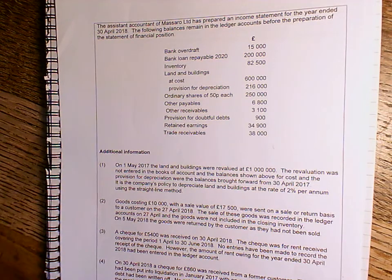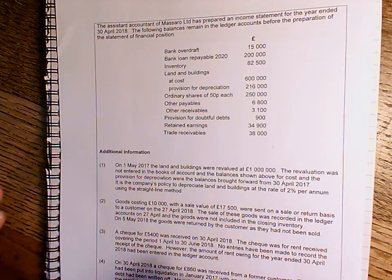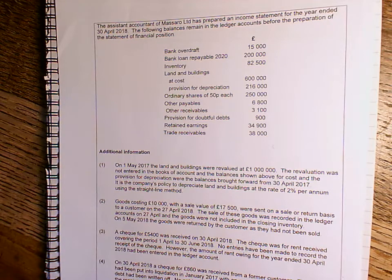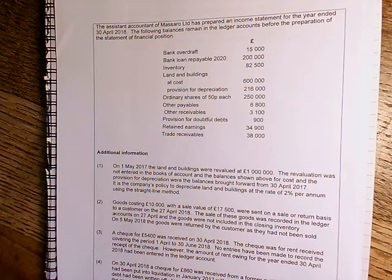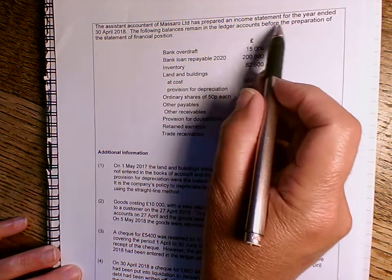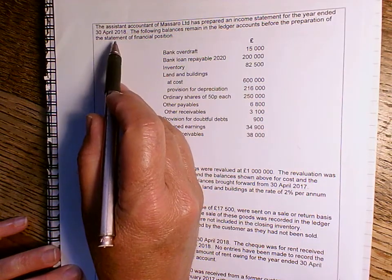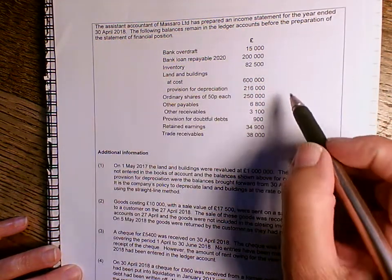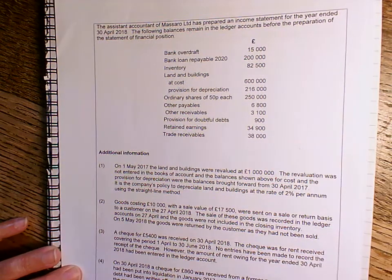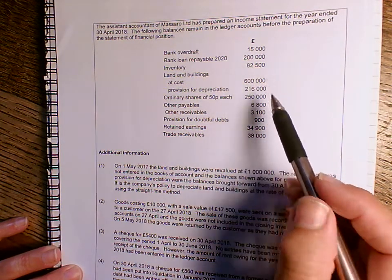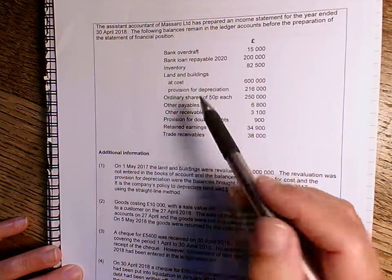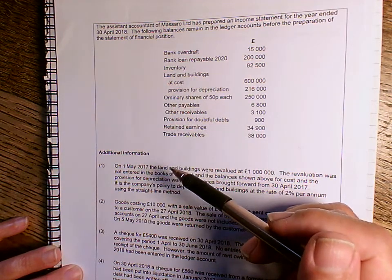Hello, I thought I'd record a quick video for you to show you how to get going with this Massaro Limited question. So the income statement has already been prepared for the year end of 30th of April 2018, and we're left with these balances in the ledger accounts. All of these are going to appear on the statement of financial position, and that's what we're going to be asked to prepare.